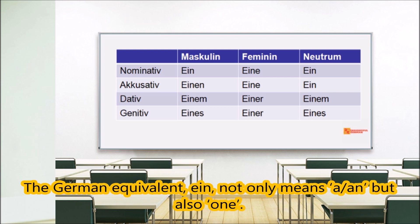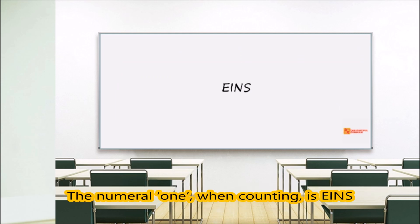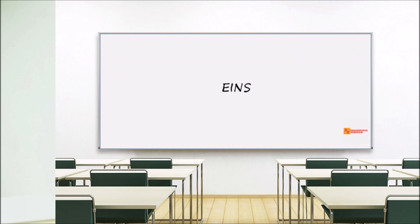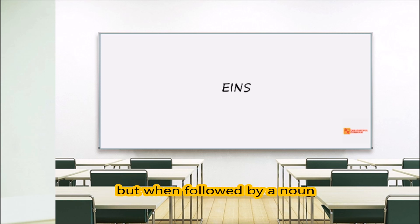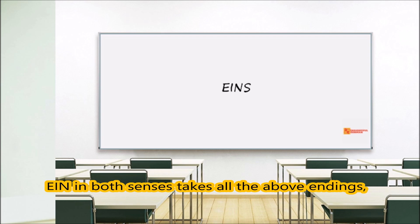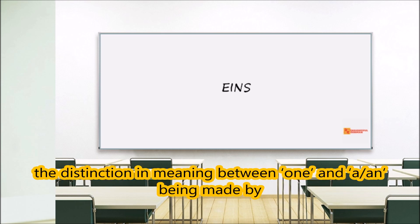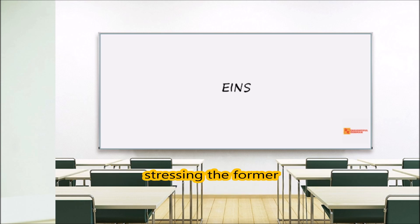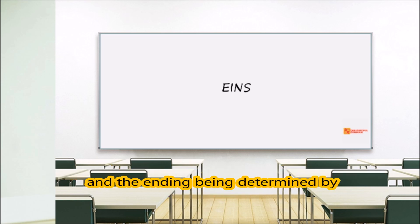The indefinite article in English — 'a' or 'an' — is very simple. The German equivalent 'ein' not only means 'a/an' but also 'one'. The numeral one when counting is 'eins' — say eins, zwei, drei, vier, fünf — but when followed by a noun, 'ein' with all its endings applies in both senses.